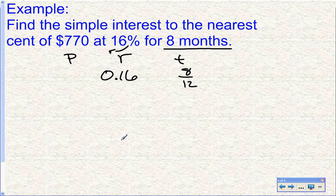Now, if you put 8 divided by 12 in your calculator, you're going to get 0.6 repeating. So I'm going to show you an easy way to deal with this so that you don't have to try and punch this in your calculator. So again, we're going to do I equals PRT.